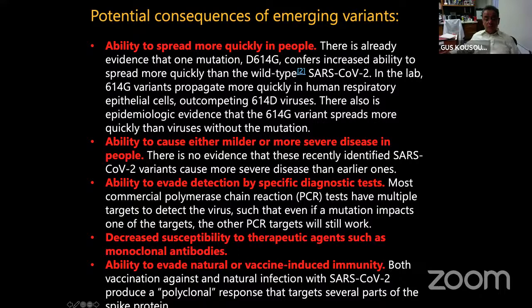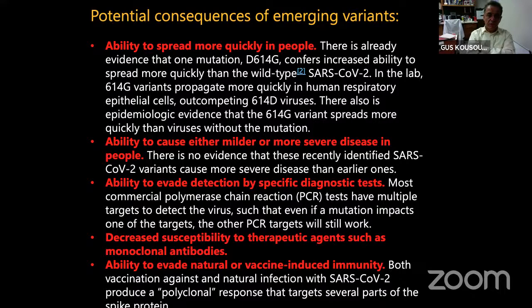Decreased susceptibility to therapeutic agents such as monoclonal antibodies is another concern — a single amino acid change can knock out monoclonal antibody therapy fairly easily, as was used to treat President Trump. Additionally, the ability to evade natural or vaccine-induced immunity is important. The open reading frames are very important here, because we don't fully understand the immunopathogenesis of these viruses. Everyone is concentrating on the spike protein as the easier target, but in reality many other factors determine how this virus controls the immune response and causes pathogenicity.